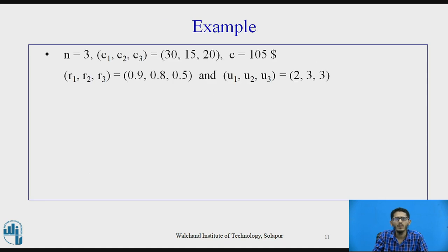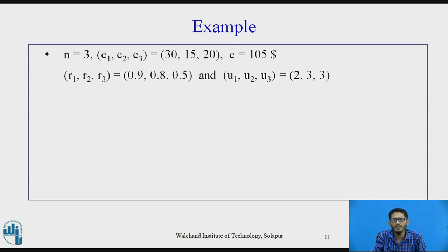Now we have the reliability design problem to be solved where n equals 3 stages. The cost values c1, c2, c3 equal 30, 15, and 20, and c the maximum cost available equals 105 dollars. The reliability of the devices r1, r2, r3 equals 0.9, 0.8, and 0.5 respectively. And u1, u2, u3 equal 2, 3, 3 — indicating the maximum copies available of devices d1, d2, and d3 respectively.